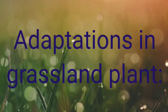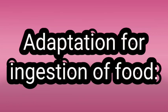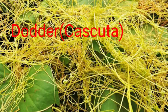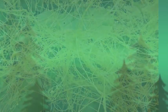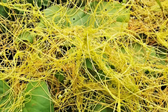Adaptations in grassland plants. In these regions, diverse types of bushes and grasses are found. They have fibrous roots. Some plants are adapted to fulfill their need for food in special ways. For example, dodder — many plants make their own food and are autotrophic, but some plants like dodder depend upon a host plant for food and water. They absorb food and water with the help of haustorial roots from the host plant.